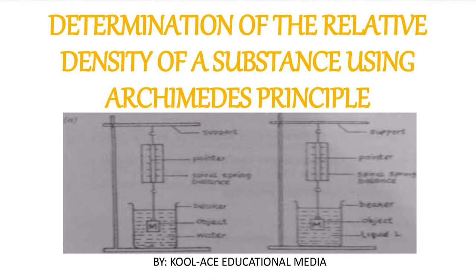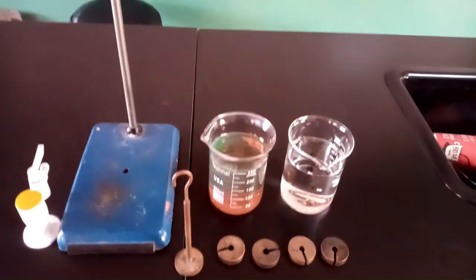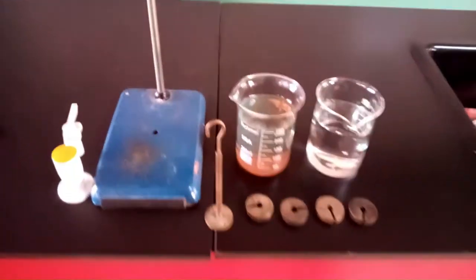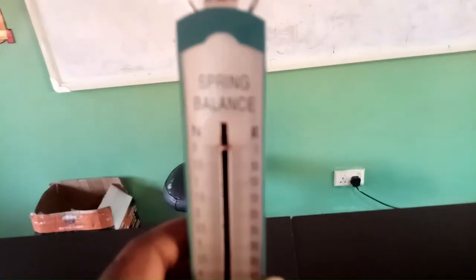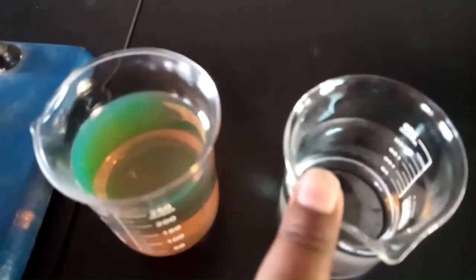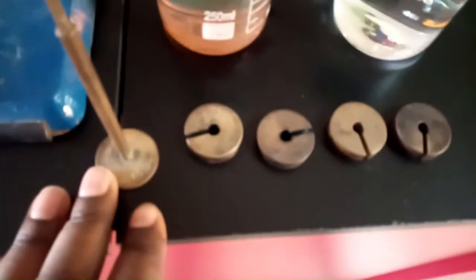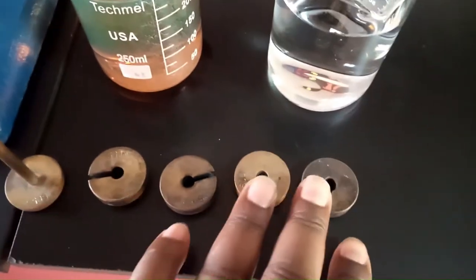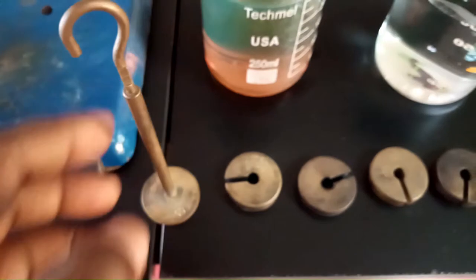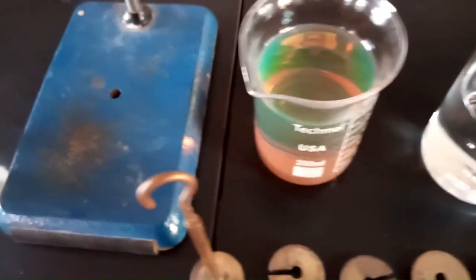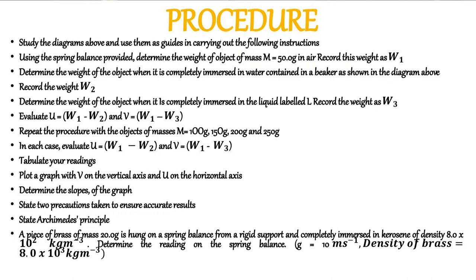Hello guys, welcome back to our class. Today in this particular experiment we are going to be determining the relative density of a substance. To achieve this we have a retort stand here with a spring balance hung on it. We have two liquids of varying viscosities — a beaker containing water and another beaker containing diesel. We also have some sets of masses: 50 gram masses, a 50 gram hanger, and four other 50 gram masses.